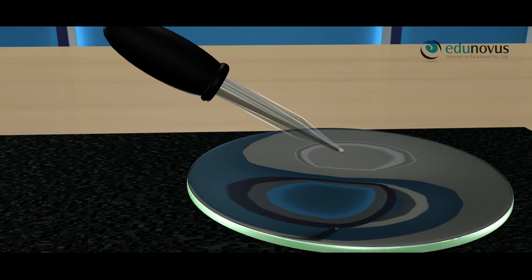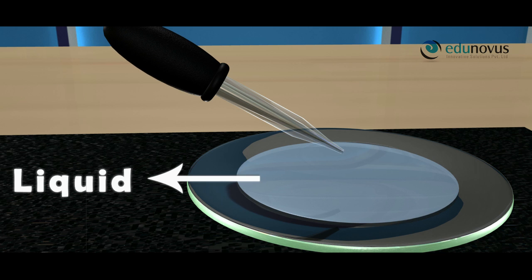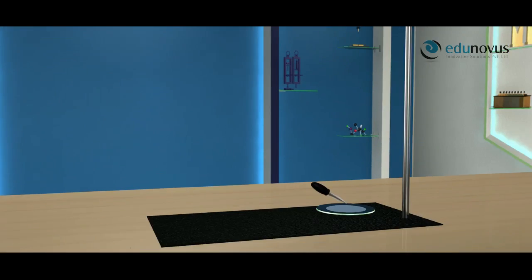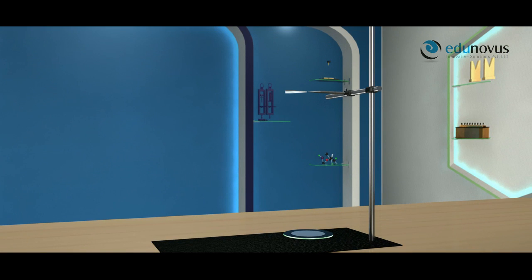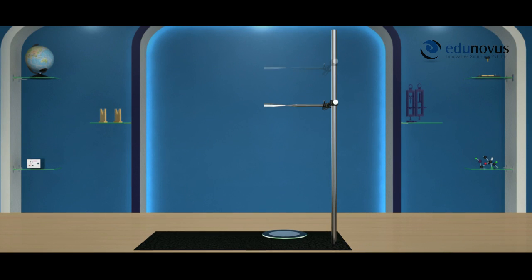Now fill the concave mirror with the liquid, that is water. Move the optical needle down to a new position until it forms a new sharp image I' of the object needle which coincides with the object needle. This point C' on the principal axis is the apparent center of curvature.